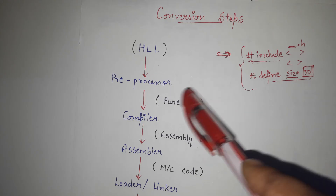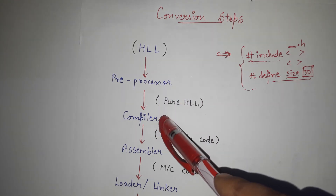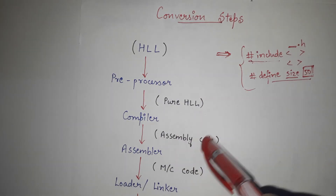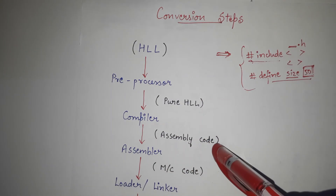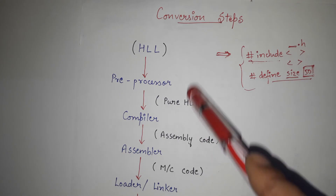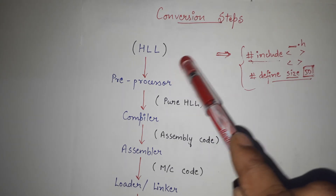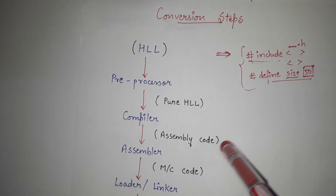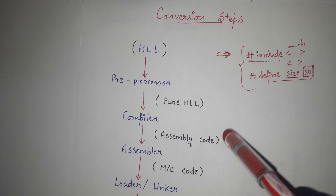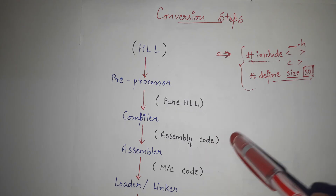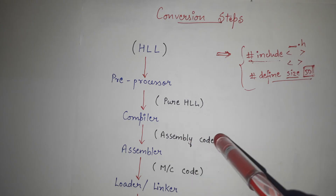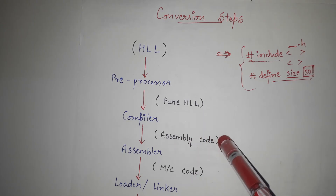Once we get the pure high-level language, it goes to the compiler. What the compiler does is convert this pure high-level language into something known as assembly code. This assembly code can be considered intermediate code — it would not be exactly like high-level language or English, but neither would it be fully executable binary. It is something intermediate, a mixture of high-level language and low-level language. This is what is called assembly code.